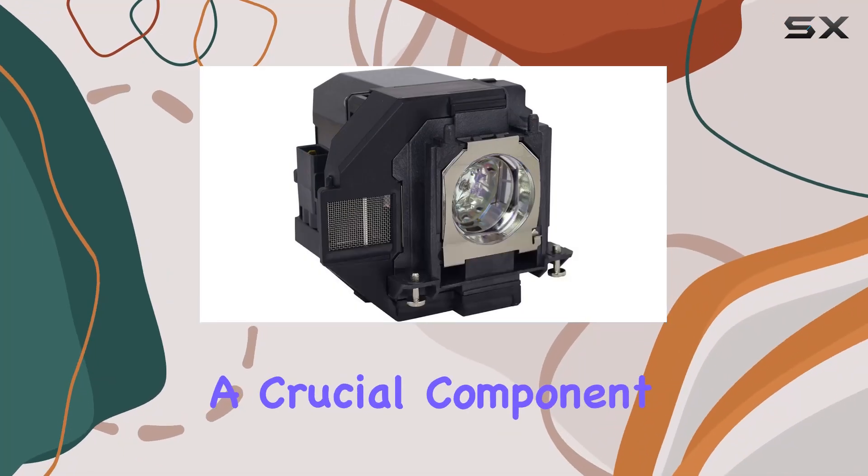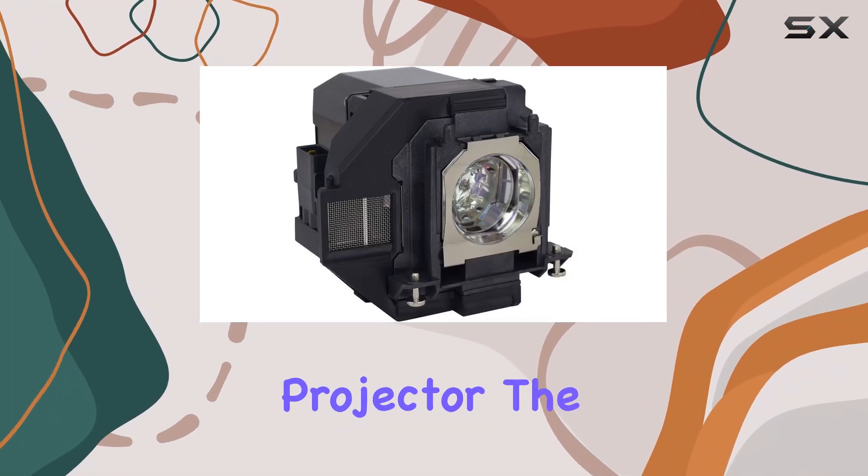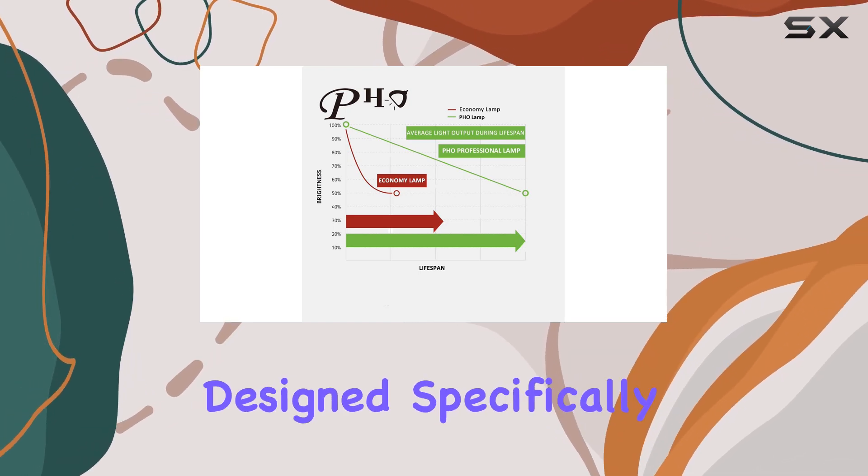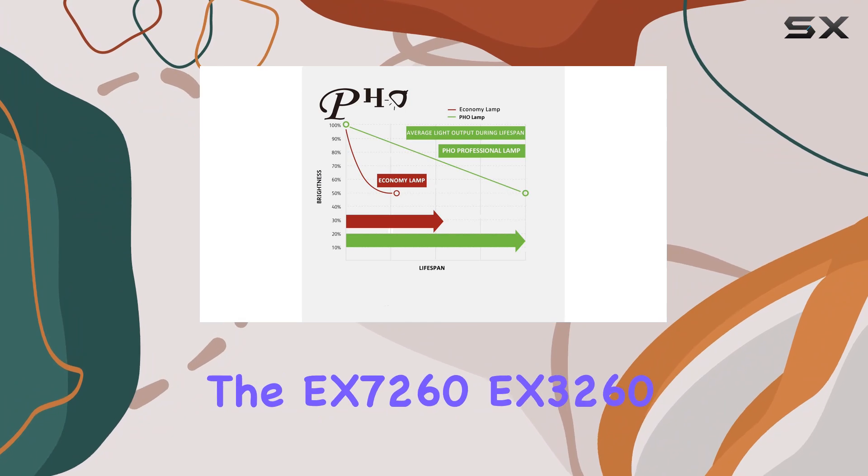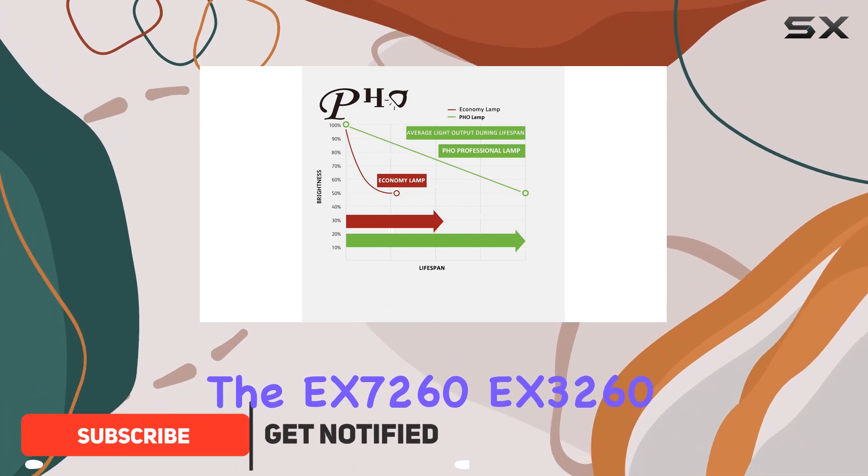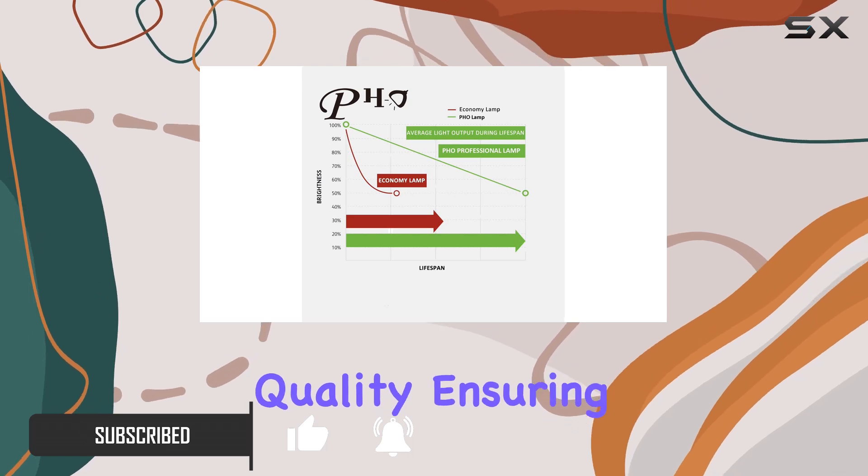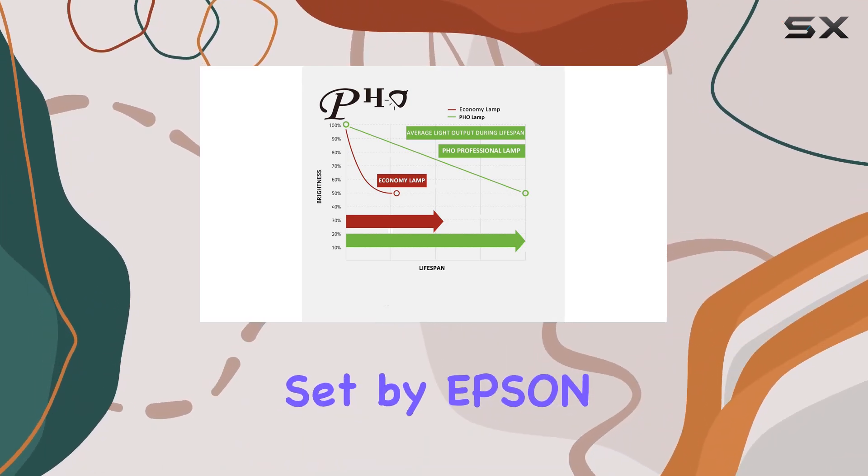Today, we're diving into a crucial component for your Epson Pro EX Series Projector, the PHO OEM Philips Bulb with housing. Designed specifically for models like the EX7260, EX3260, and others, this replacement lamp boasts genuine OEM quality, ensuring it meets the exacting standards set by Epson.